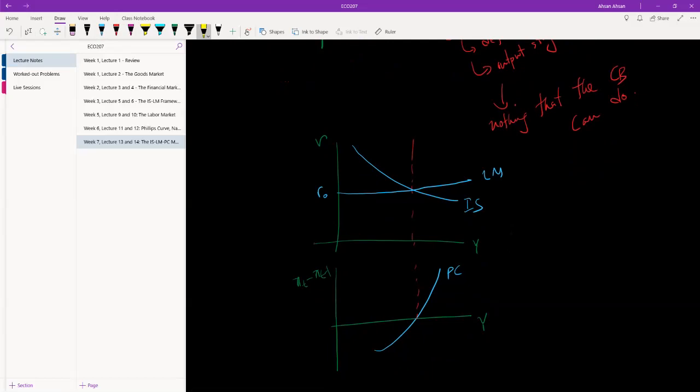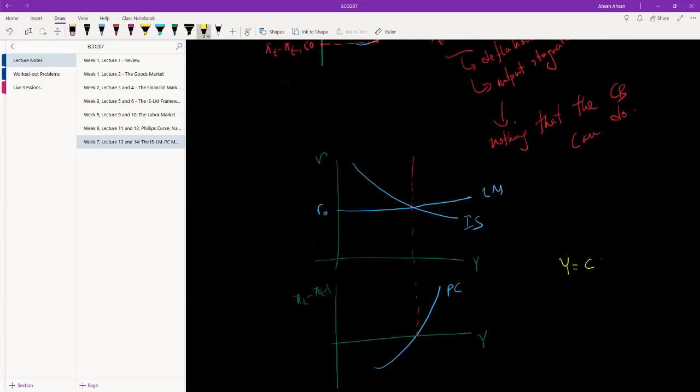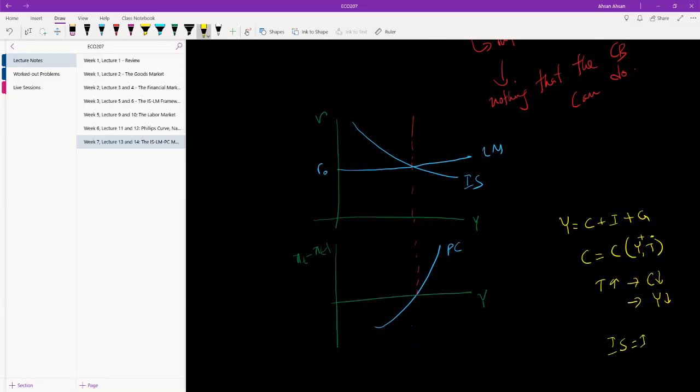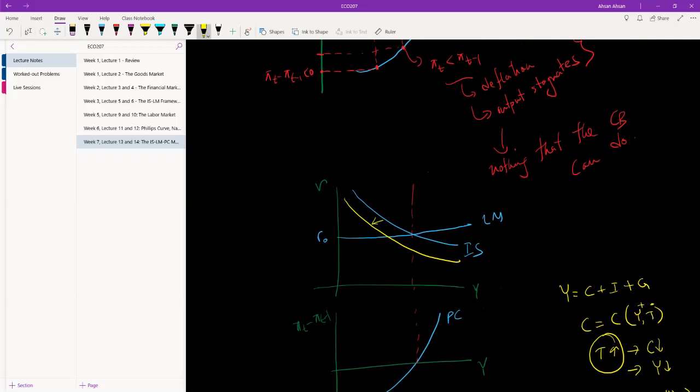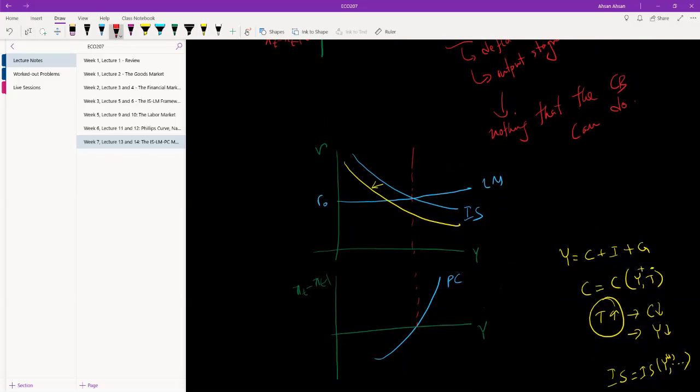Now suppose the government wants to increase taxation. So in case you don't remember, let's just go through this. Y is equal to C plus I plus G. And C is a function of Y and T. Y positively, T negatively. So if T goes up, what that is going to mean is that C is going to go down. As a result, Y is going to go down. And if Y goes down, remember, the IS curve is a function of I, Y and a few other things positively. So if the government increases tax, the IS curve is going to shift to the left. I may have rushed through the explanation right there, but we've done this in chapter four and five. So hopefully it wasn't too difficult for you guys to follow. So as a result of this, what you see is two things.